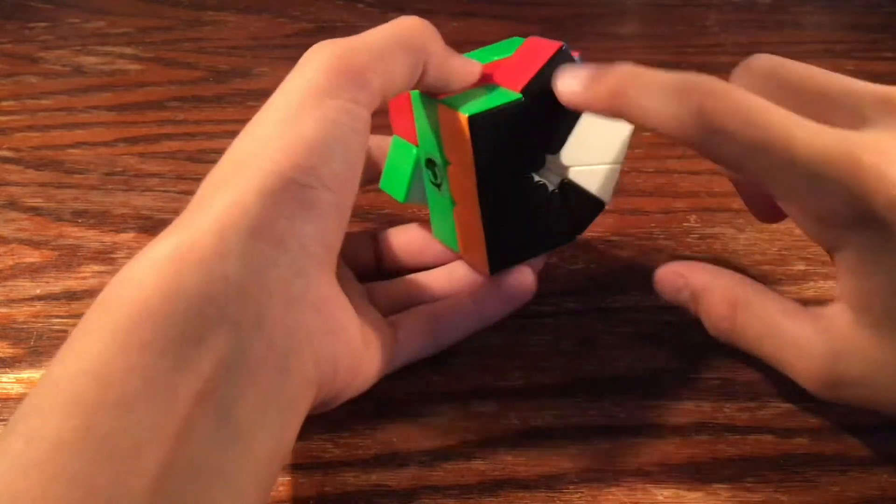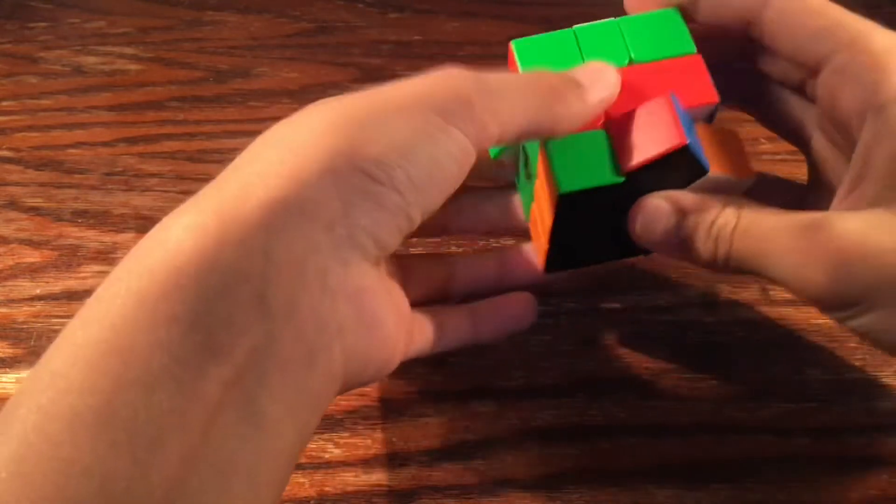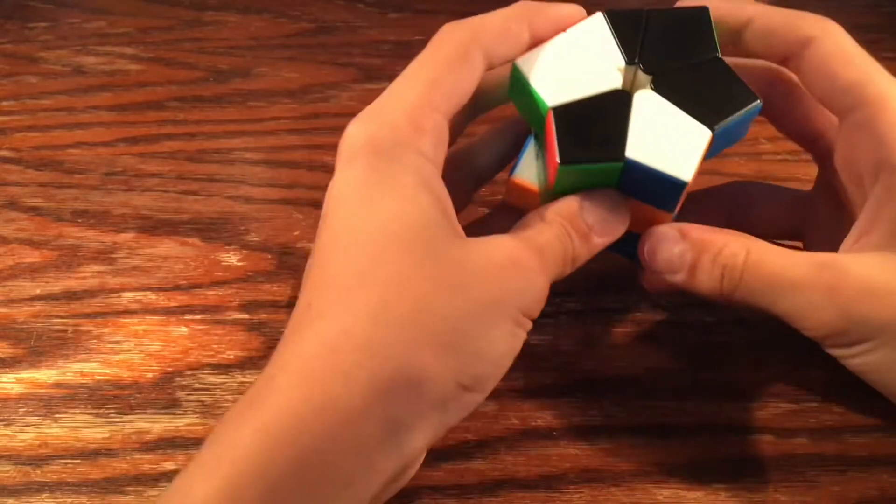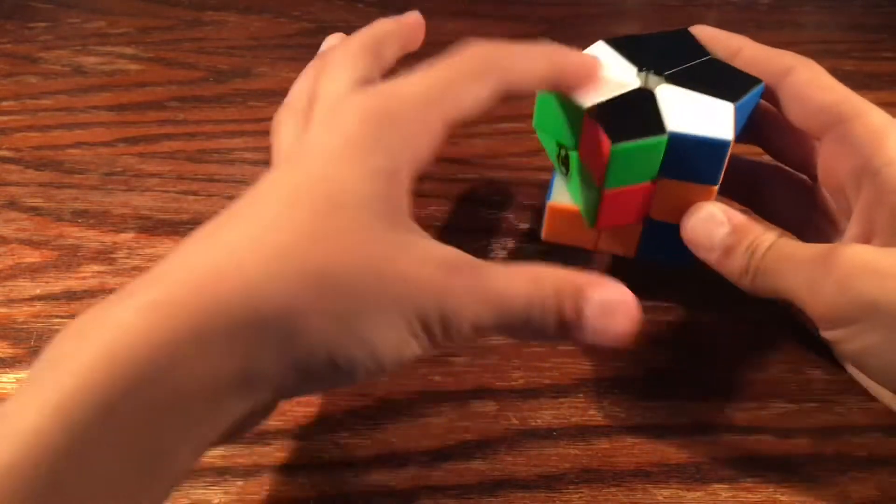Then we see we have these three edges right here, I mean corner pieces. We'd take them and put them to the top layer, just like that. And then we'd cut this in half, going this way.